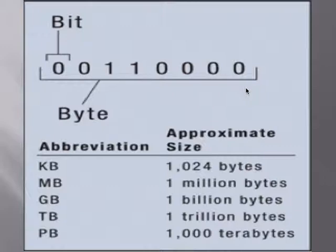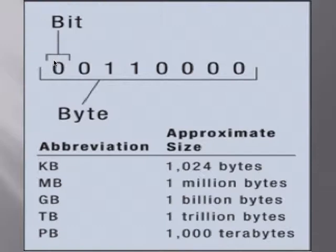What we have on the screen at the moment is what's called a bit, and that's represented by either a zero or a one. As you would know from previous study in our computer courses, a digital device or computer is either on or off, represented by a zero or a one. That's how we get computers to perform tasks — by feeding through a whole series of zeros and ones, millions and billions and quadrillions of them, through the machine.